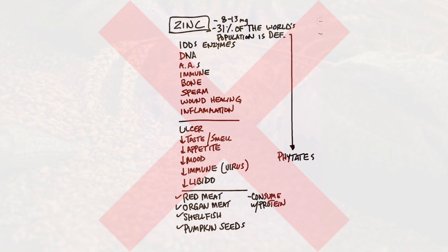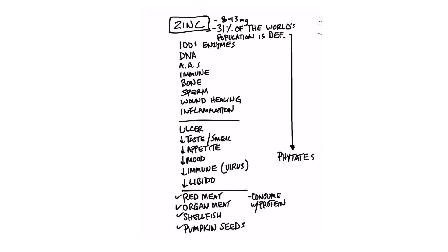Zinc is probably the most important trace mineral ever, because it's involved in hundreds and hundreds of different enzymes. It's involved in making DNA and amino acids. It's very important for your immune system, making T cells, bone health, producing sperm, wound healing, and helping regulate inflammation — especially in your lungs. If you're deficient in zinc, you can get an ulcer, loss of taste, loss of smell, loss of appetite. It can affect your mood making you very irritable, and it can increase your susceptibility to certain viruses of the lung.